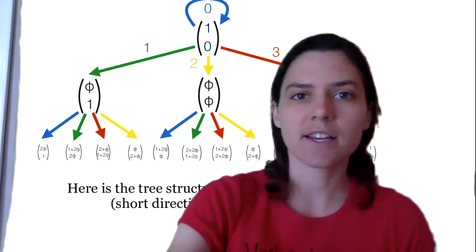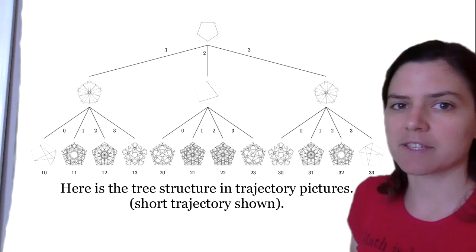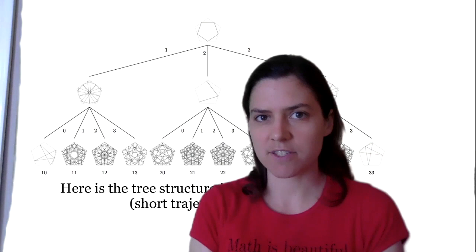We also get a tree structure here. Last time we had a binary tree; now we have a quaternary tree. Starting with our simplest direction (1,0), applying the four transformations gives three new vectors, and from each of those we apply the four transformations, and so on. Here are the directions and trajectory pictures: the simplest trajectory parallel to an edge, then the next simplest, and the next simplest. This gives us a kind of tree of increasing complexity of trajectories.